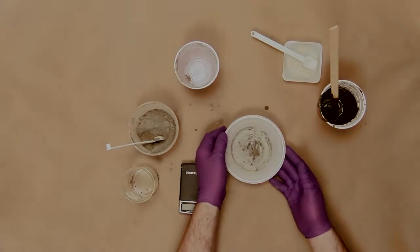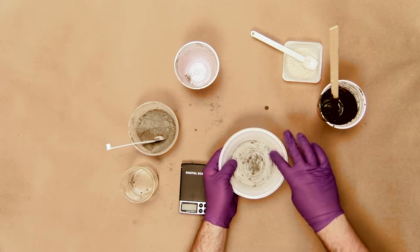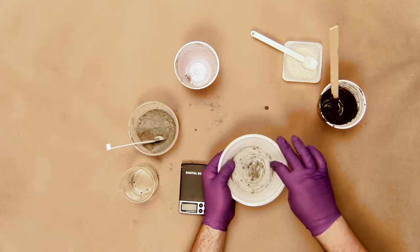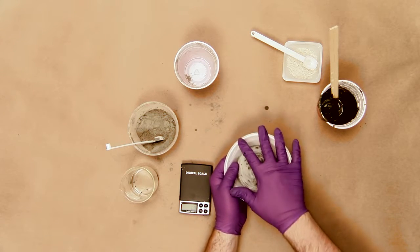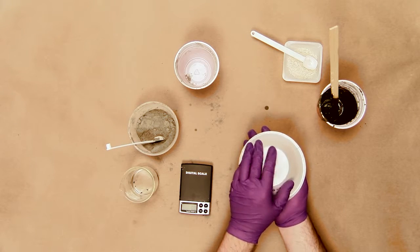The following day, de-mold the cement paste pucks by gently pulling on the sides of the Styrofoam bowl to loosen the bond between the paste and bowl. Place your hand over the top of the bowl and turn it over.